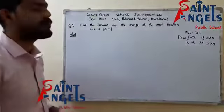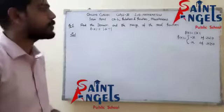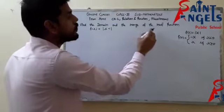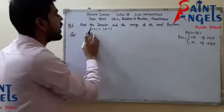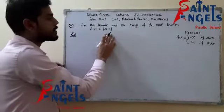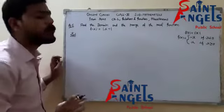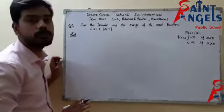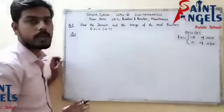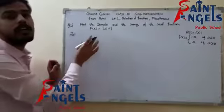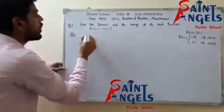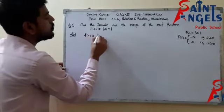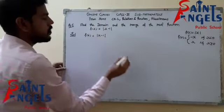Students, now look at question number 5 of chapter 2: find the domain and the range of the real function f(x) = mod(x − 1). I will solve it by two methods — it's up to you which method you find most suitable. First of all, I am solving it graphically. So f(x) = mod(x − 1), and we'll draw the graph.